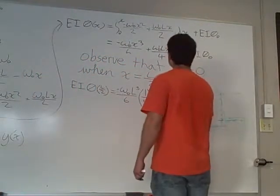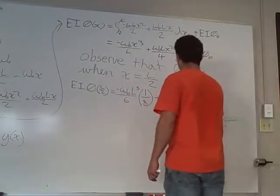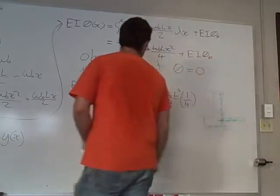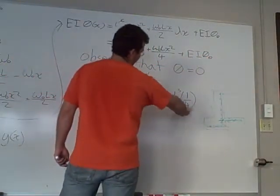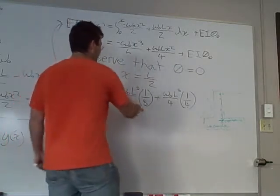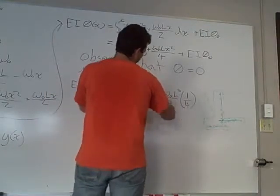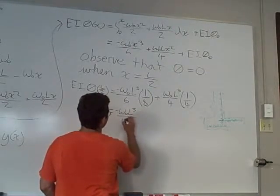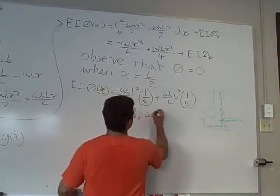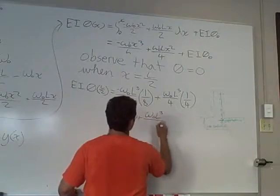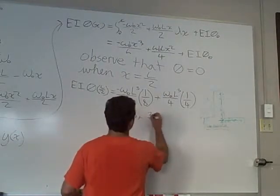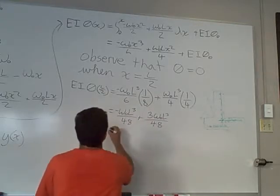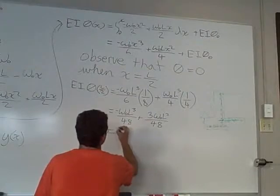And so I see that we have 48 and we have 16. If we times 16 by three, we'll get 48. So we have negative WL to the third over 48, plus WL to the third, plus three times WL to the third over 48. And so this is going to equal WL to the third over 24.